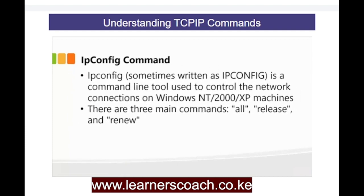The ipconfig command is a command-line tool used to control the network connections on your Windows machine. There are three main forms: ipconfig by itself, ipconfig /all, and ipconfig /release and /renew. This shows you the actual configuration of your IP network. The release and renew commands release the existing assigned IP address and request a new one from the server — a good diagnostic tool.